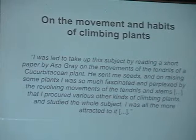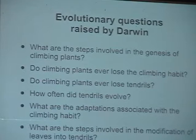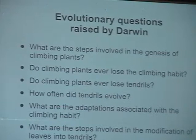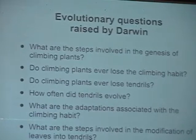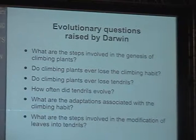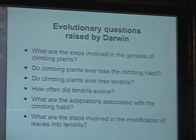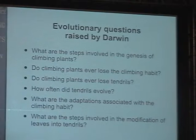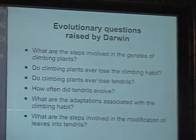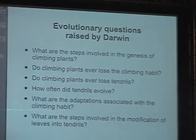Even though Darwin did a lot of ecological observations on these plants, this led to a series of evolutionary questions that he left at the end of his book. Some of these included: what are the steps involved in the genesis of climbing plants? Do climbing plants ever lose the climbing habit or lose tendrils? How often did tendrils evolve? And what are the adaptations associated with the climbing habit?